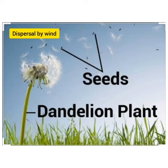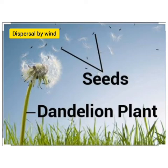Dispersal by wind: some seeds are very light. The seeds of orchid are almost as fine as dust and are easily carried to a new place by the wind. Cotton and dandelion seeds have hair-like structures. These act like little parachutes and carry the seeds far away from the parent plant.